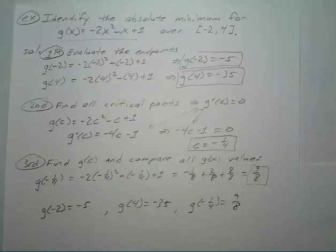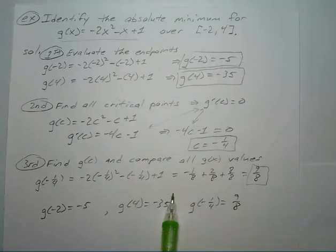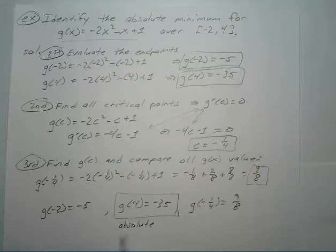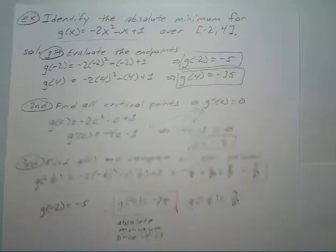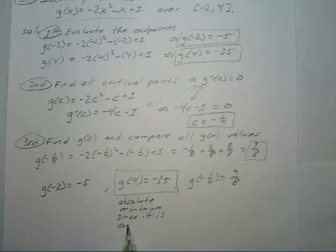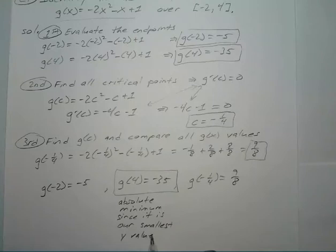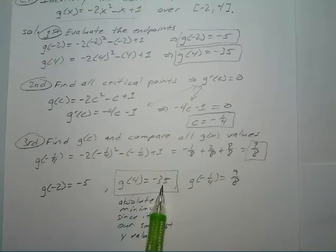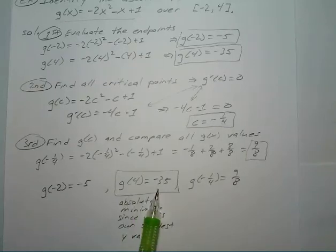What's your smallest value? That would be negative thirty-five, so this is your absolute minimum since it is our smallest y value. Remember that y equals g of x, so that's why we can say this is our smallest y value. When you plug in four you get negative thirty-five — that is your absolute minimum.